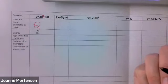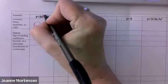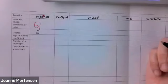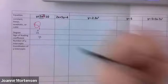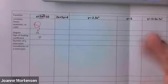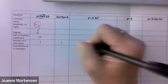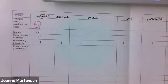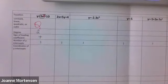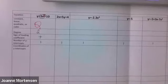The sign of the leading coefficient — this whole term here is my leading term. Is that three positive or negative? Good. Don't put three in there; it says sign, so it's plus or minus, those are your choices. Number of y-intercepts? One. These are polynomial functions — they're only going to cross the y-axis once.